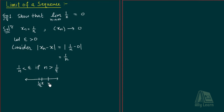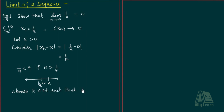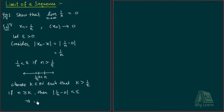Ab agar ham isse bada natural number lehen — n, agar k se bada koi natural number lehen — toh woh 1/epsilon se bhi bada hoga. Toh jayse ki woh 1/epsilon se bada hoga, humara 1/n this one is less than epsilon. So choose k belonging to natural numbers such that k is greater than 1/epsilon. So if n is greater than or equal to k, then |1/n minus 0| is less than epsilon, which implies by definition of limit: limit of 1/n equals 0. This is how to work with definition of limit.